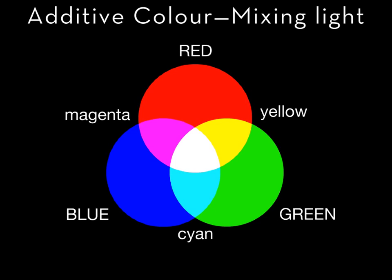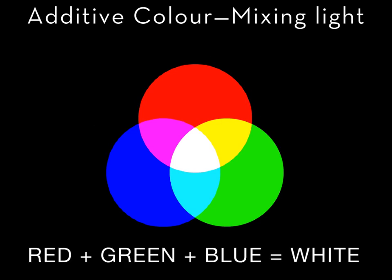Here I have the three primary colors projected with secondary colors appearing where any two colors overlap. But now for the first time we see the black screen has become white where all three of the primary light colors are projected. Primary red plus primary green plus primary blue add up to white light.